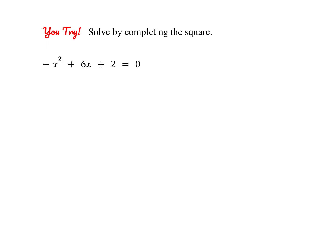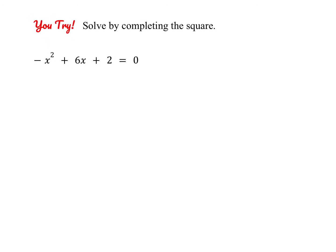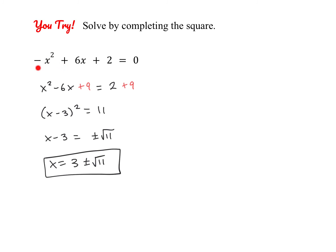So go ahead and pause the video and give this one a try on your own. We'll check your answer in just a few seconds. Okay, go ahead and check here. You can see here that I actually added x squared and subtracted 6x to create a positive x squared term. And then 9 is the number that completes our square, so this trinomial becomes x minus 3 squared. And then from here you can take the plus or minus square root of each side and then add 3. So here is our answer.